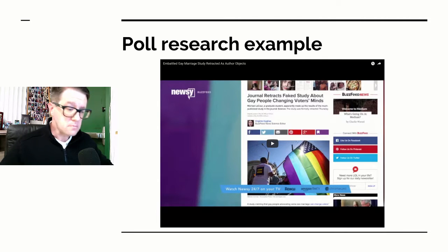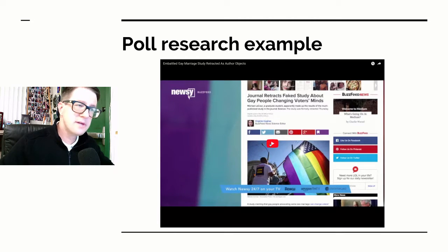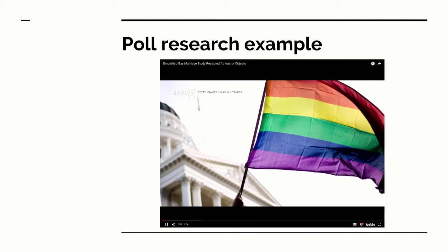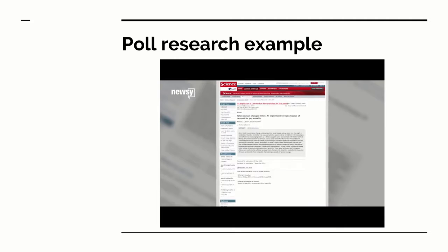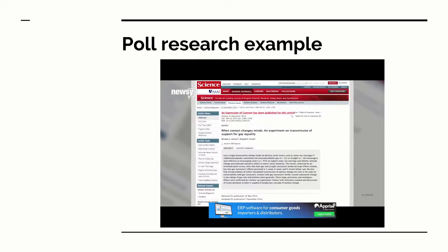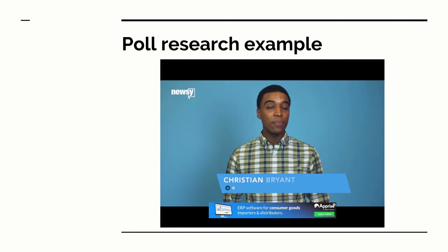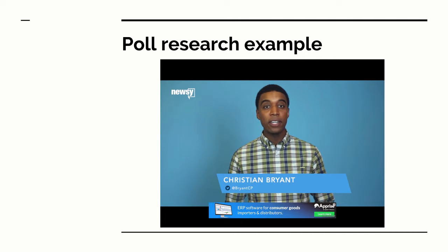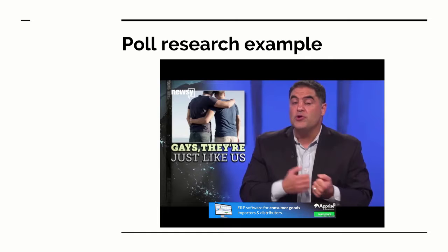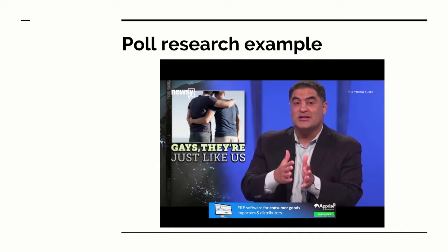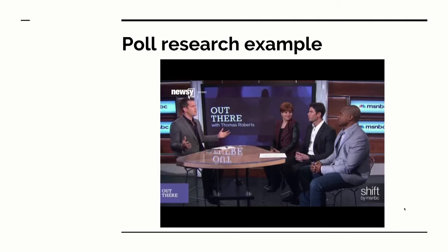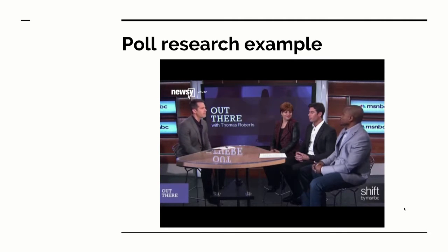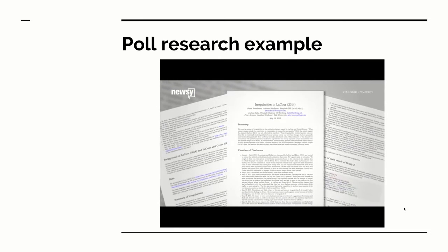Here's another example of research going wrong — this one involves psychology and sociology, so it's more on the social science side. A controversial study claimed a brief conversation with a gay canvasser could change people's minds about same-sex marriage. It was retracted despite the author's objections. The study appeared in the prestigious journal Science. The takeaway was that talking to a gay person for 20 minutes could make people rethink their opinions — and up to a year later, they had even changed the beliefs of people they lived with.